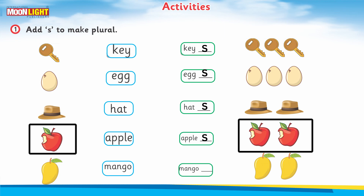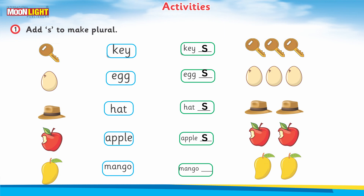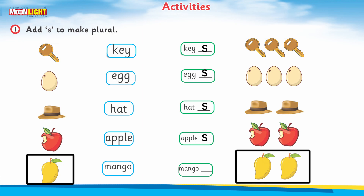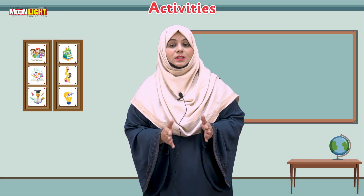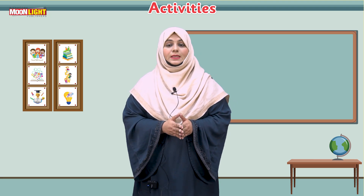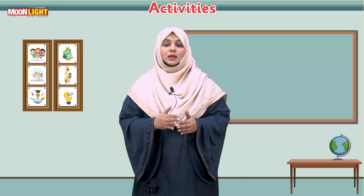Now you can see a picture of a yummy mango. This is only one, so it is singular. There are two more mangoes, and the spellings are already given, but you have to write the letter 's' after the spelling to make 'mangoes'. I hope in this video you have learned how to place the letter 's' after given nouns.